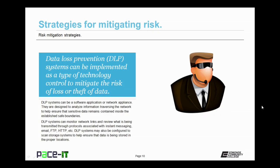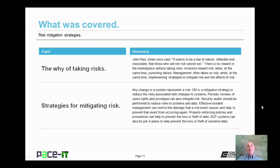Data loss prevention systems can be implemented as a type of technology control to mitigate the risk of loss or theft of data. DLP systems can be a software application or a network appliance. They are designed to analyze information traversing the network to help ensure that sensitive data remains contained inside the established safe boundaries. DLP systems can monitor network links and review what is being transmitted through protocols associated with instant messaging, email, FTP, and HTTP. DLP systems may also be configured to scan storage systems to help ensure that data is being stored in the proper location.